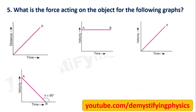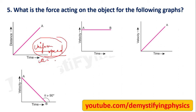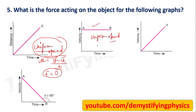What is the force acting on the object for the following graphs? The first distance-time graph represents uniform speed, so acceleration is zero — since v and u are equal, (v - u)/t = 0. Therefore force is also zero. The second graph also represents uniform velocity, so acceleration is zero and force is zero.